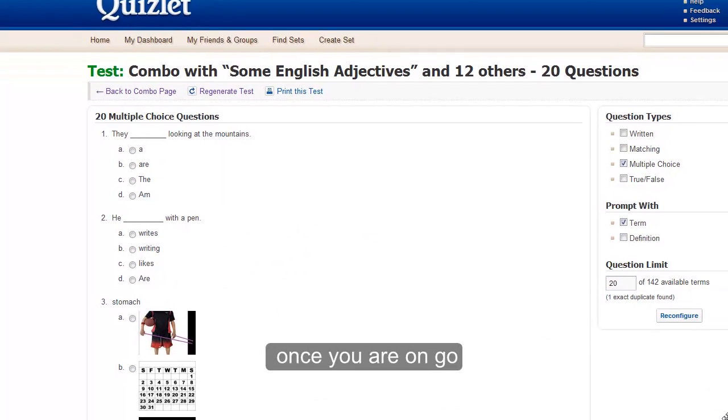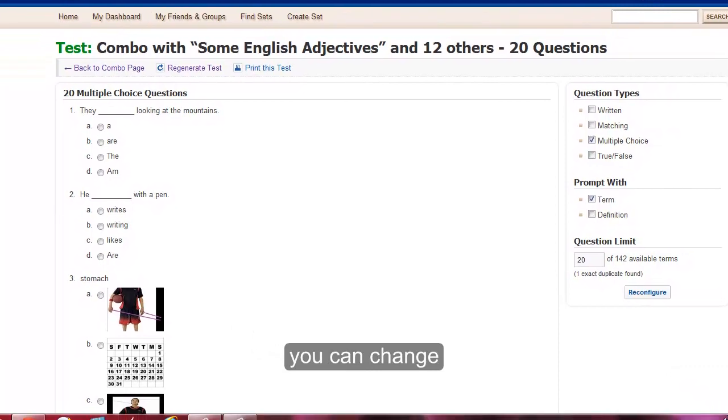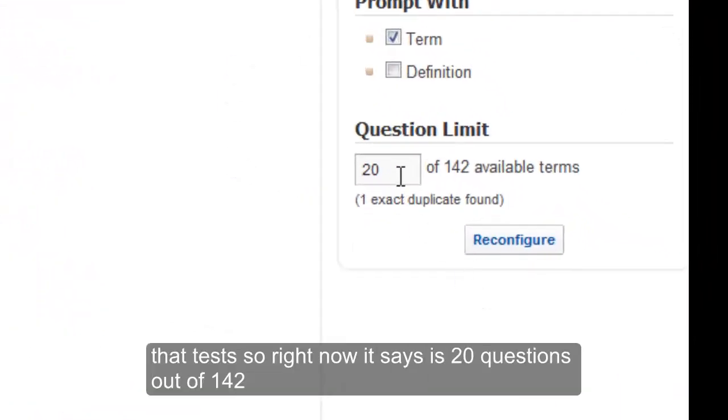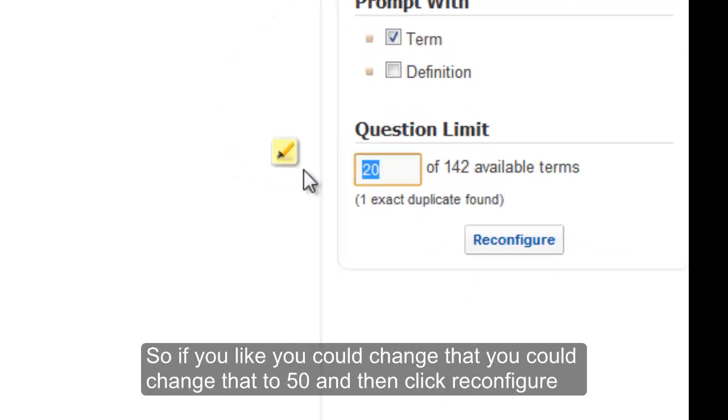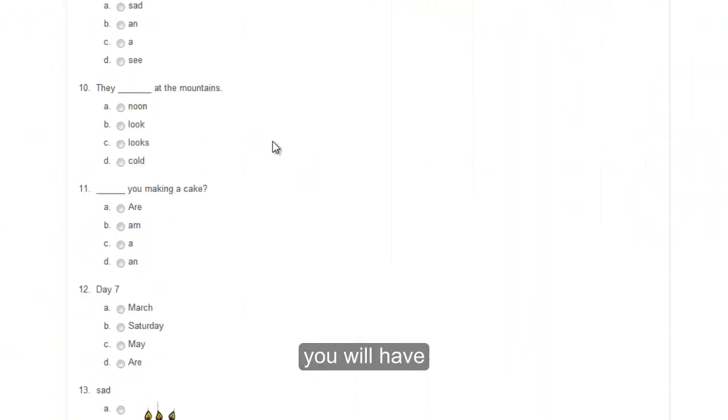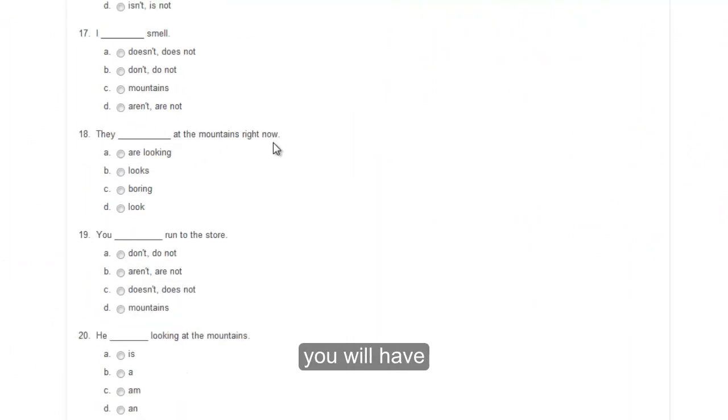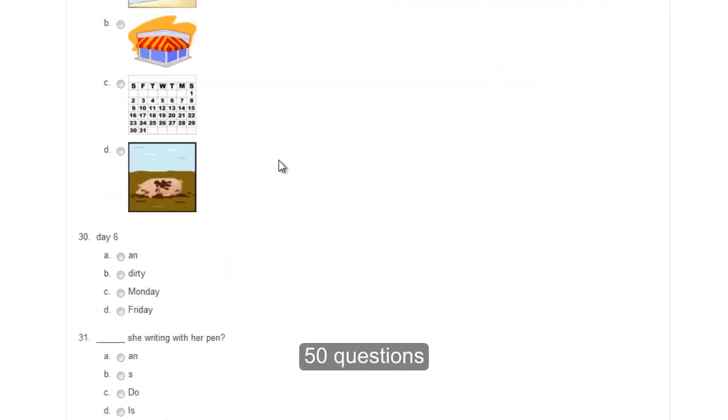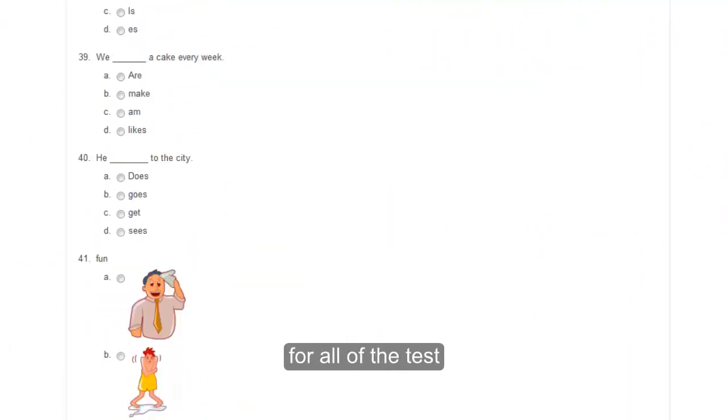Once you are on Go, you can change the tests. So right now it says there's 20 questions out of 142. So if you'd like, you could change that. You could change that to 50, and then click Reconfigure. And then when you go down, you will have 50 questions for all of the tests.